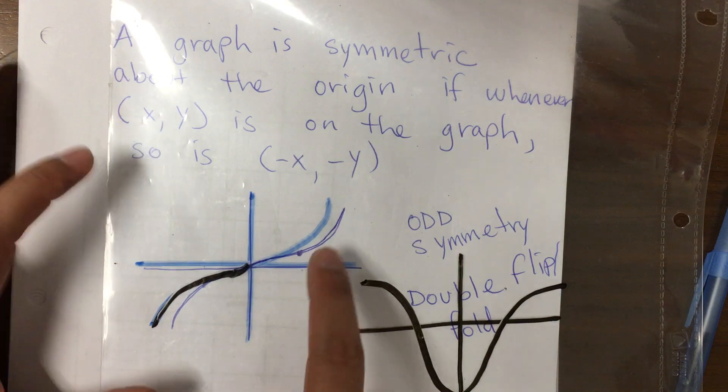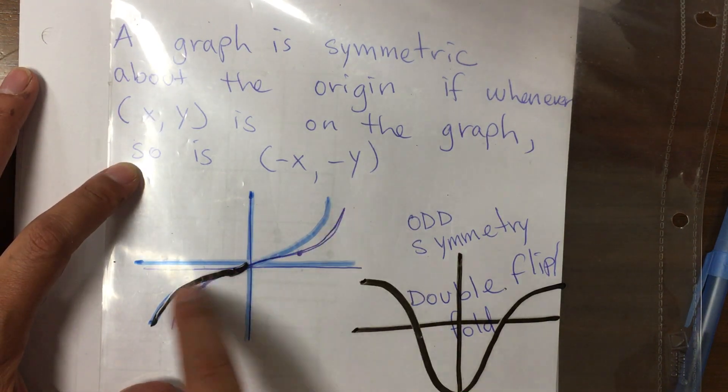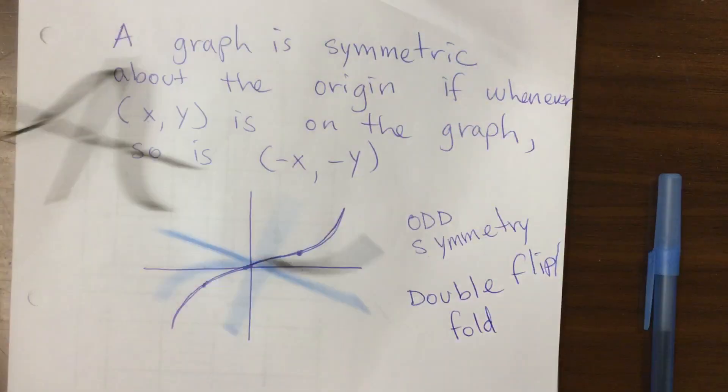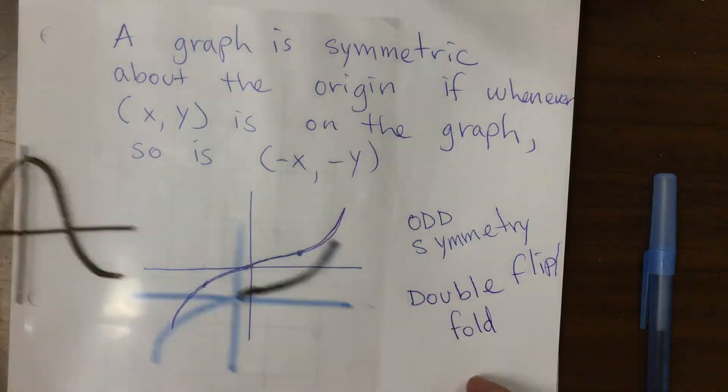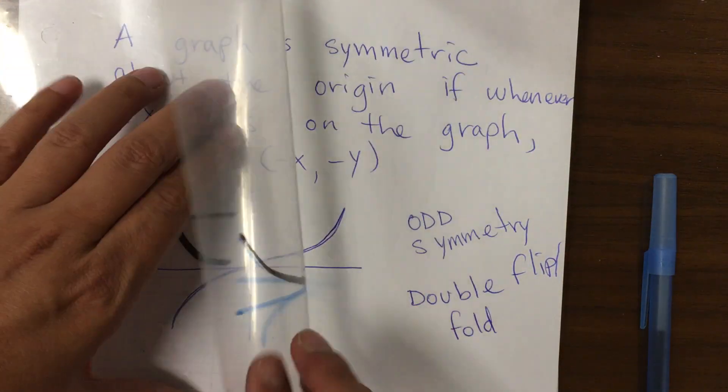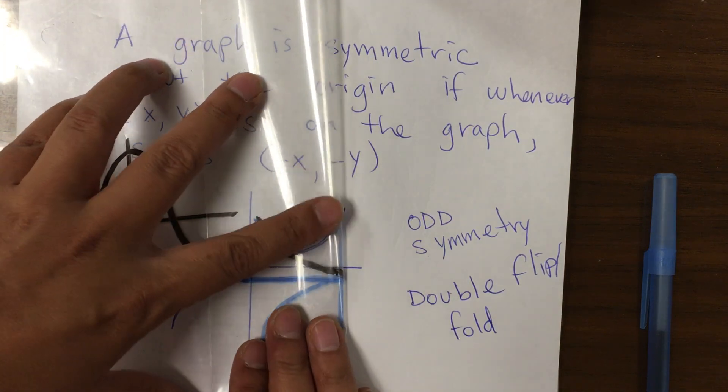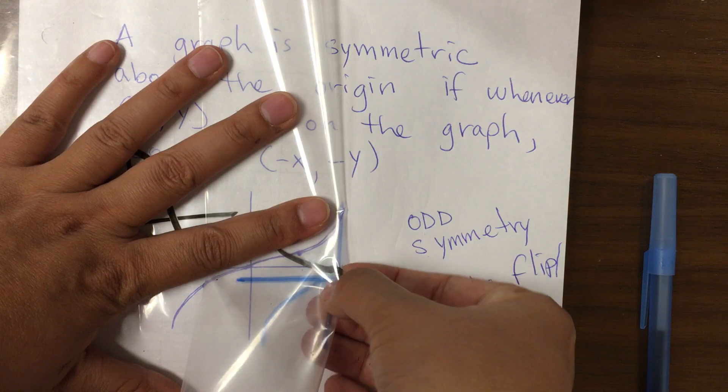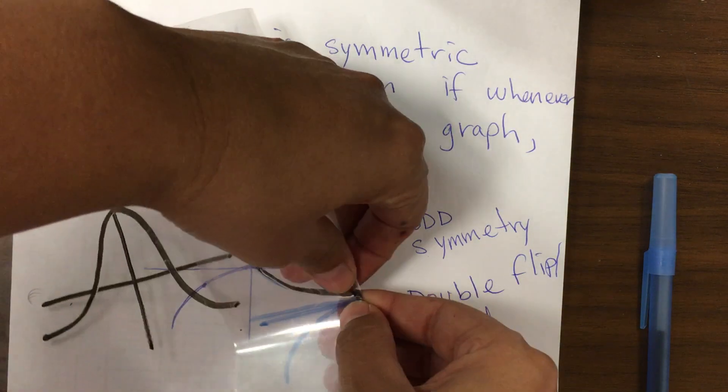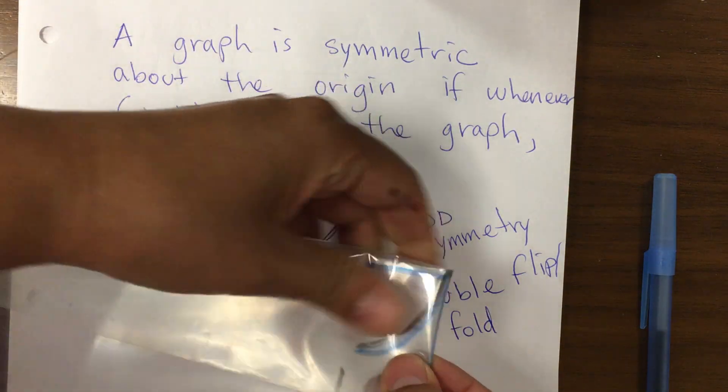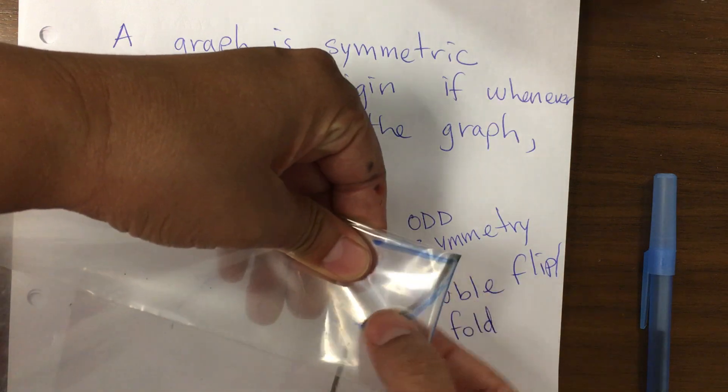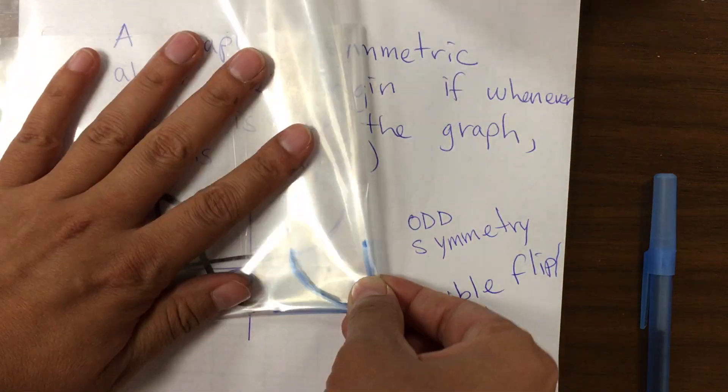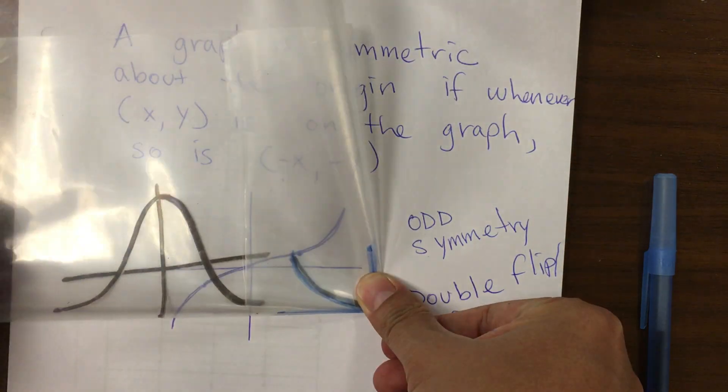And it matches, right? The other way to do it, it means you fold it twice about the origin and they match. The two curves match, and you're folding twice.